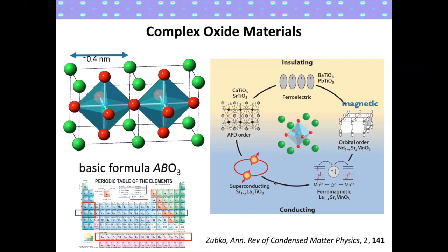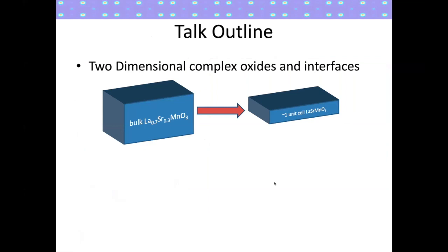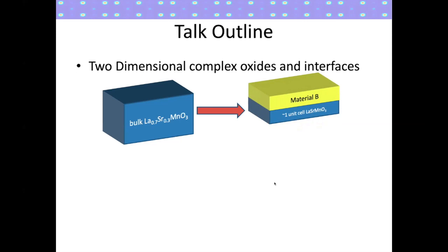My talk today is going to focus on dimensionality as a parameter by which we can tune the properties of these systems. What I'm going to talk about is how we can go from lanthanum strontium manganite, which is well understood in bulk, and reduce its dimensions in thin film form to the order of a unit cell, and understand how these properties change and how it couples to other materials at interfaces with these ultra-thin systems.